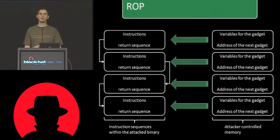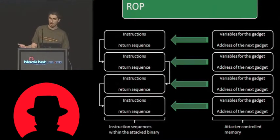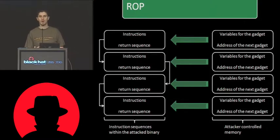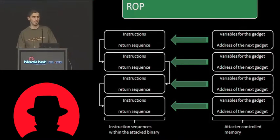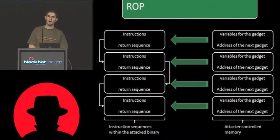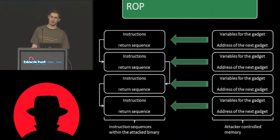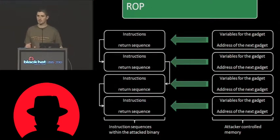Usually the way you solve this problem is through return-oriented programming. In this picture, we have an attacker-controlled buffer and then a sequence of instructions that are basically executed when the exploit is launched. The simplest way to look at return-oriented programming is that the attacker-controlled buffer can be compared to a crafted stack. What you will have on this stack are addresses of instructions in the text segment of libraries or the main executable, and you will then have a bunch of variables that need to be used by those gadgets while they run.